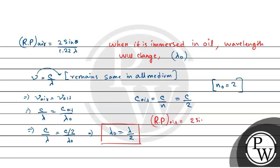2 sin theta by 1.22 lambda oil. This equals 2 sin theta by 1.22 lambda times 2, because lambda o equals lambda by 2. So, this equals resolving power in air times 2.